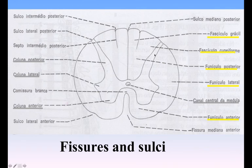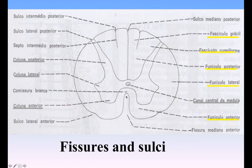Fissures and Sulci. An anterior median fissure and a posterior median sulcus incompletely divide the medulla spinalis into two symmetrical parts which are joined across the midline by a commissural band of nervous matter. The anterior median fissure, fissura mediana anterior, has an average depth of about 3 mm, but this is increased in the lower part of the medulla spinalis. It contains a double fold of pia mater and its floor is formed by a transverse band of white substance, the anterior white commissure, which is perforated by blood vessels on their way to or from the central part of the medulla spinalis.